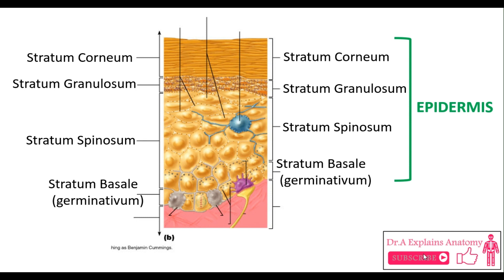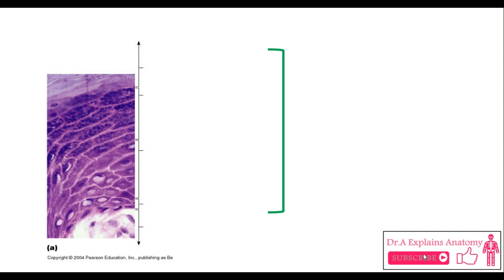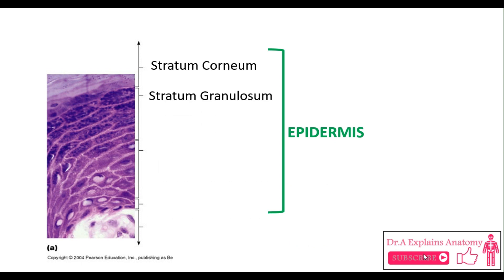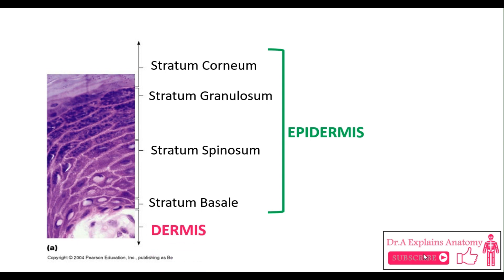Right under the epidermis, we have the dermis. Moving to the histology view of the epidermis. First, this is the stratum corneum. Right under it, we have the stratum granulosum with all these dark purple granules. Right under it, we have the stratum spinosum. And at the base, we have the stratum basale. Right under the epidermis, we have the dermis — you can see part of the dermal papilla.